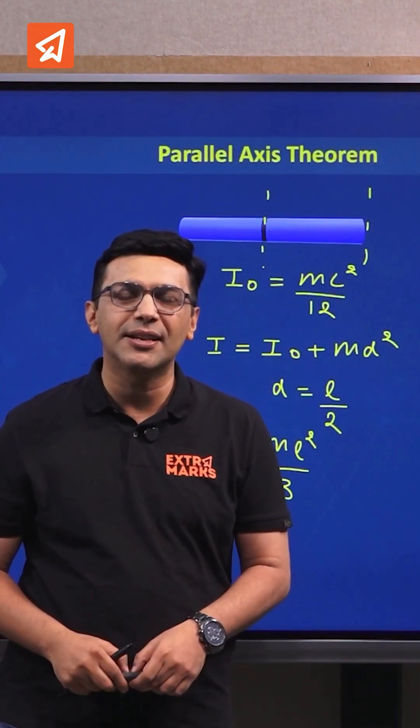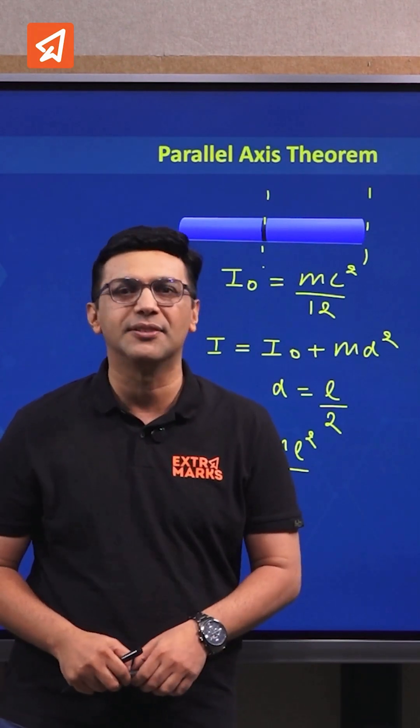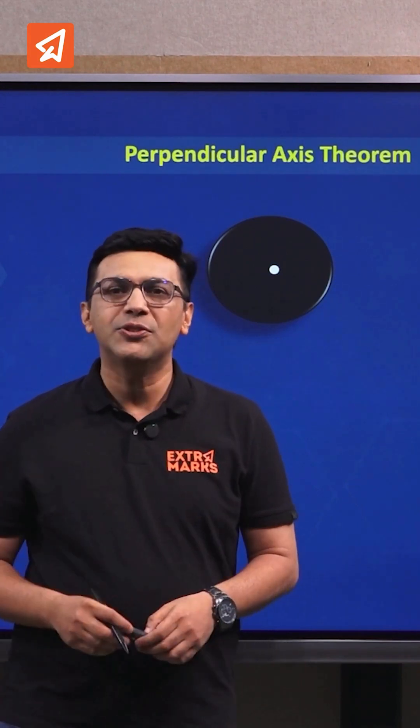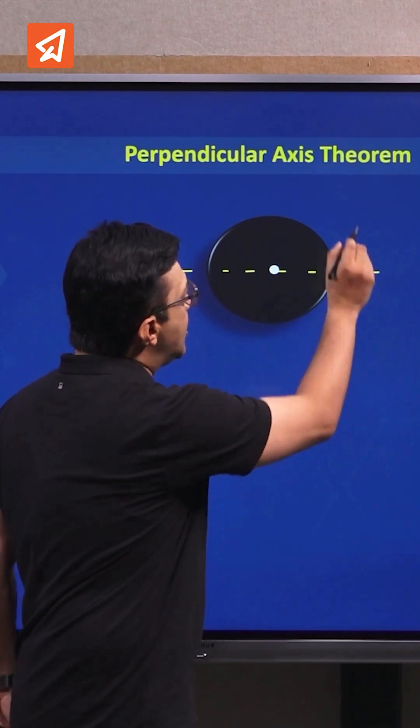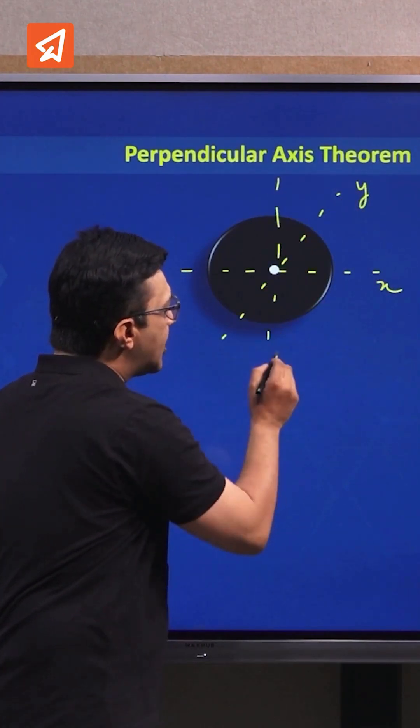Now let us consider another case in which we will be applying the second theorem, which is known as the theorem of perpendicular axis. Theorem of perpendicular axis we apply when we have two-dimensional objects. If we have to calculate the moment of inertia about any of these axes, which could be one of the diameters, then we have to apply the theorem of perpendicular axis.